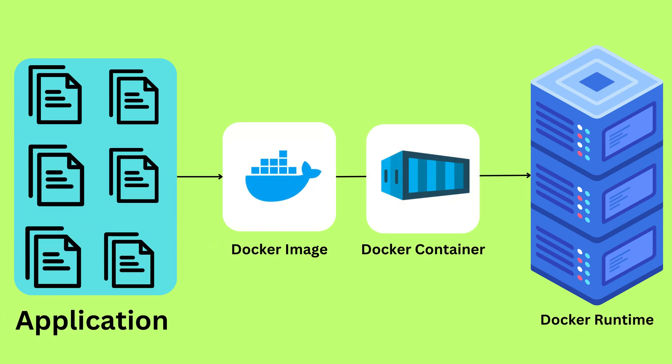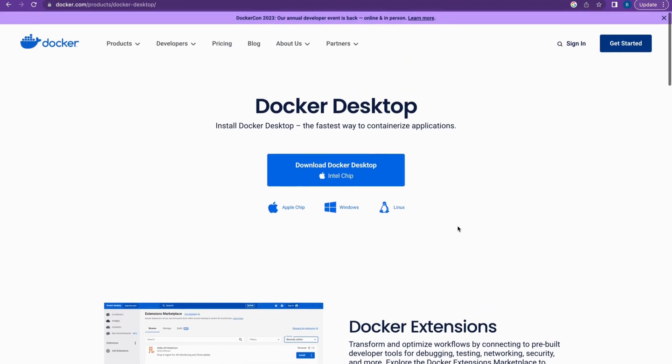When you have Docker, all you need to do is create a Docker image from all the files to run the application. You can then run this Docker image as a container wherever a Docker environment is available — for example, on Google Cloud, AWS, or Microsoft Azure. You can deploy this image wherever you want, provided there is a Docker environment available there. That makes it easy to migrate your application into a server every time, and Docker provides many other solutions to developers as well.